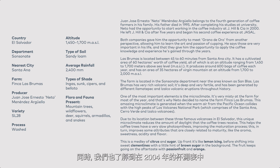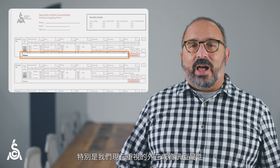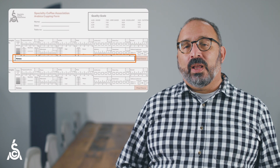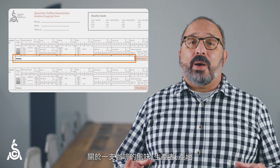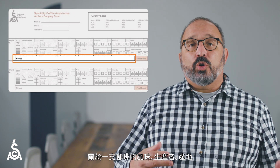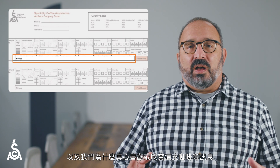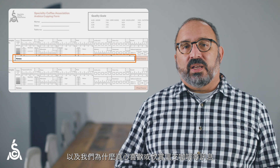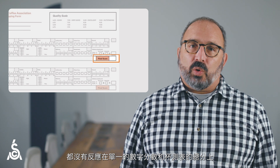We also learned that in the 2004 form, there just isn't enough space to capture the wider range of attributes — especially extrinsic or informational attributes that we value now. And even more importantly, none of that information about how a coffee tastes, about who produced it and where, anything about what we really love and appreciate about a coffee gets reflected in that single number, the total cupping score.